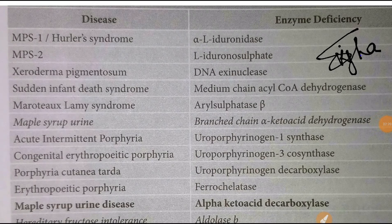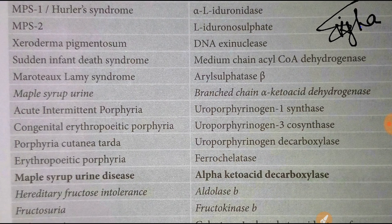Hurler's syndrome, also called MPS type I — alpha-L-iduronidase. MPS II (Hunter syndrome) — iduronate sulfatase. Xeroderma pigmentosum — DNA exonuclease. Sudden infant death syndrome (SIDS) — medium-chain acyl-CoA dehydrogenase.